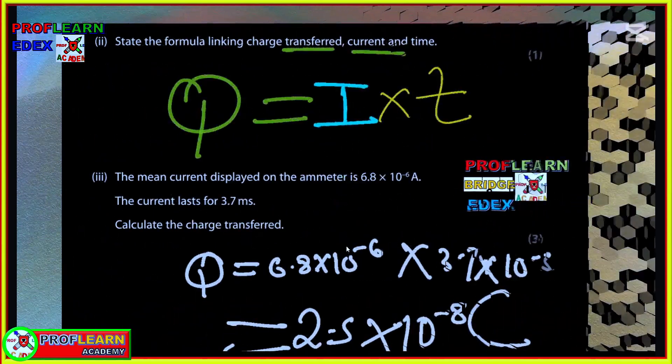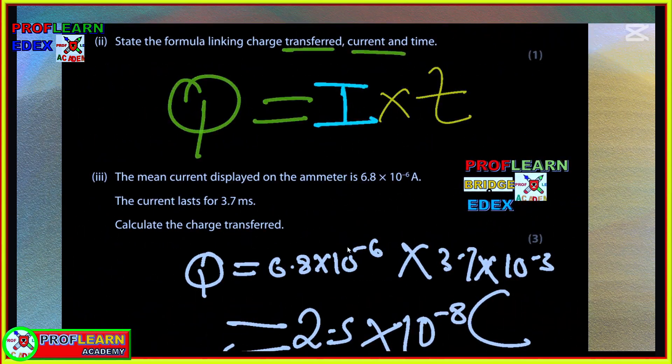Now moving to Roman 3: state the formula linking charge transferred, current, and time. You are supposed to say Q = IT. The mean current placed on the ammeter is 6.8 times 10^-6 amperes. The current is 3.7 milliseconds. We were supposed to calculate the charge transferred. Remember milli is 10^-3. Working it out you get 2.5 times 10^-8.